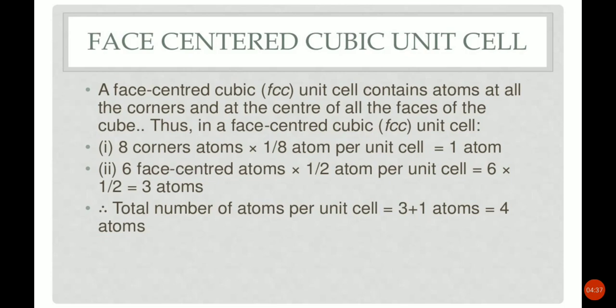In an FCC unit cell, the 8 corners contribute 8 × 1/8 = 1. Each face center atom is shared between 2 unit cells, so the contribution of one face-center particle is 1/2. With 6 faces, that gives 6 × 1/2 = 3 atoms. Therefore, the total number of atoms = 8 × 1/8 + 6 × 1/2 = 1 + 3 = 4 atoms.